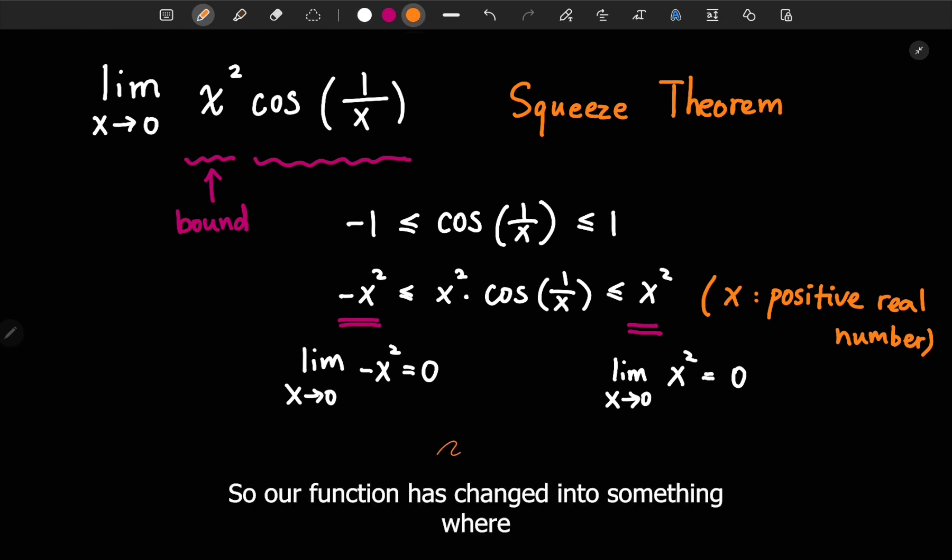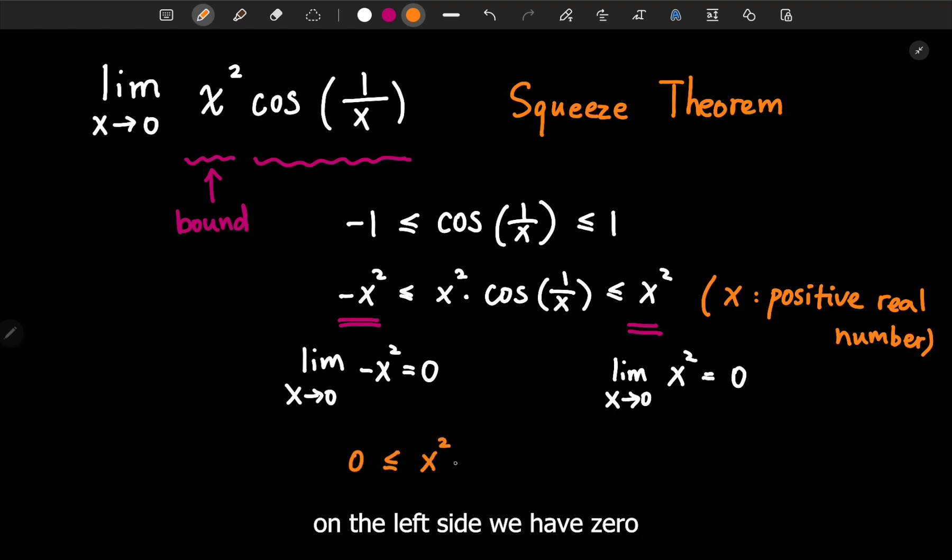So our function has changed into something where, on the left side, we have 0. And in the middle, we have our function, x squared times cosine 1 over x. And on the right side, we also have 0.